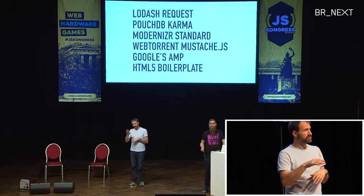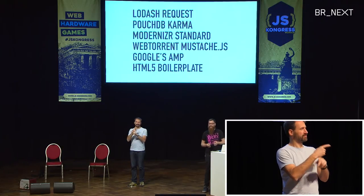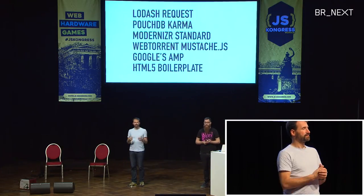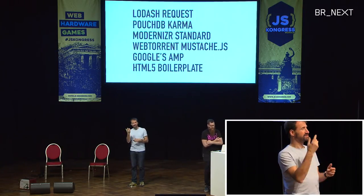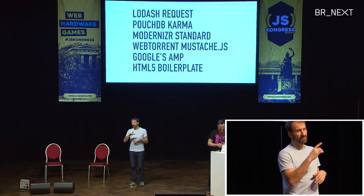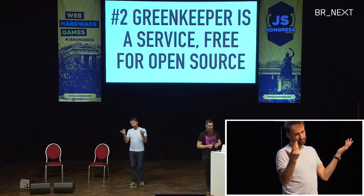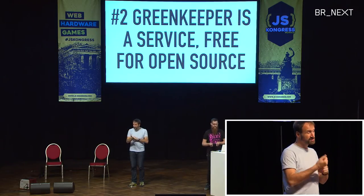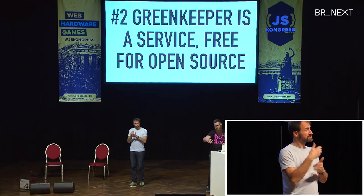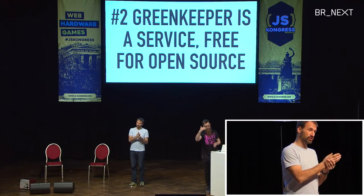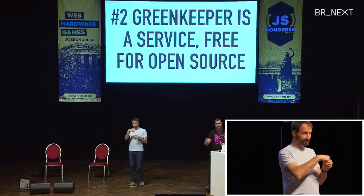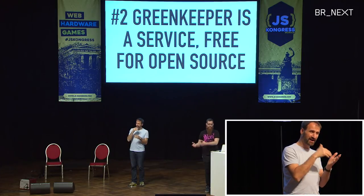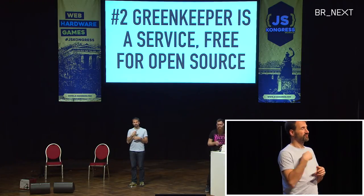There are about 10,000 projects on GitHub already using Greenkeeper, including Lodash, Request, PouchDB, Karma, Modernizr, Standard, WebTorrent, Mustache.js, Google XAM, and HTML5 Boilerplate. You can join them today. Greenkeeper is free for open source, and also free for one private repo. The new version using the new GitHub API is currently in beta, so even private stuff is free right now — but we'll eventually charge for that.